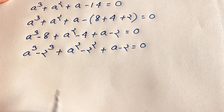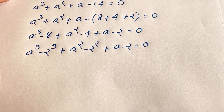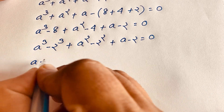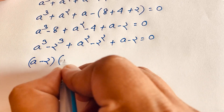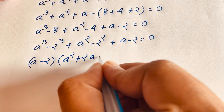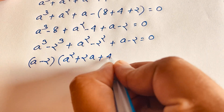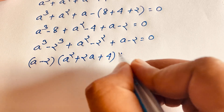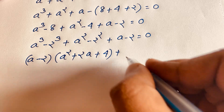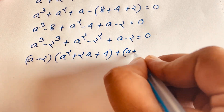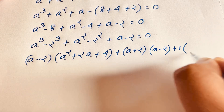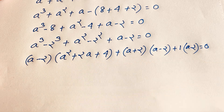Applying the difference of cubes rule — a cubed minus b cubed equals (a minus b)(a squared plus ab plus b squared) — the first group factors as (a minus 2)(a squared plus 2a plus 4). Applying the difference of squares rule — a squared minus b squared equals (a plus b)(a minus b) — the second group gives (a plus 2)(a minus 2). The last group is simply (a minus 2). So the equation becomes (a minus 2)(a squared + 2a + 4) plus (a plus 2)(a minus 2) plus 1 times (a minus 2) equals 0.